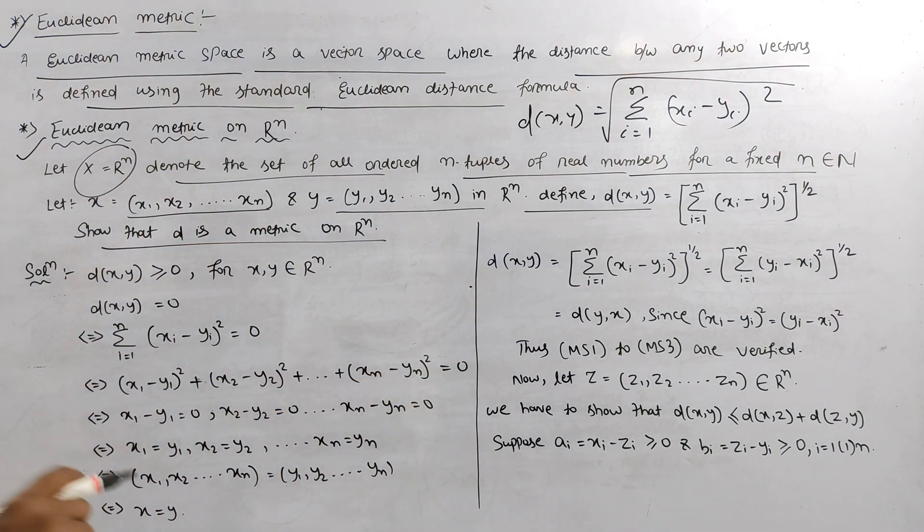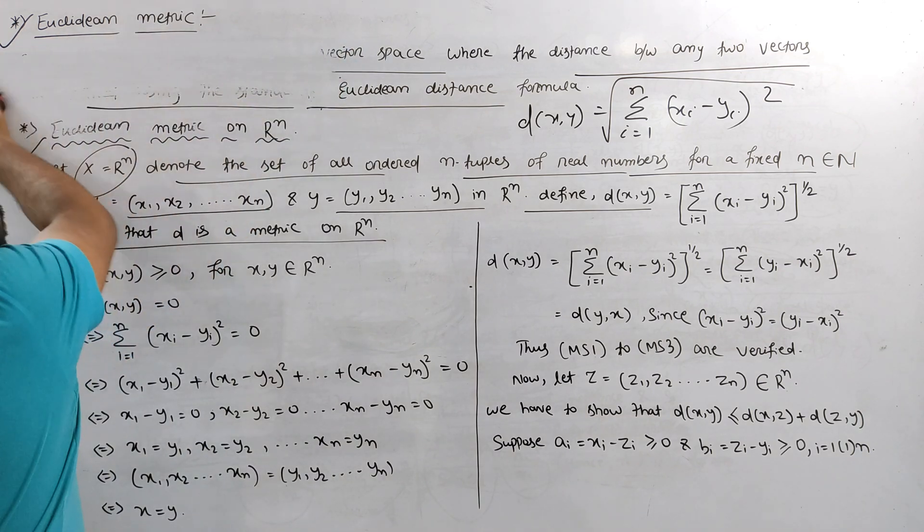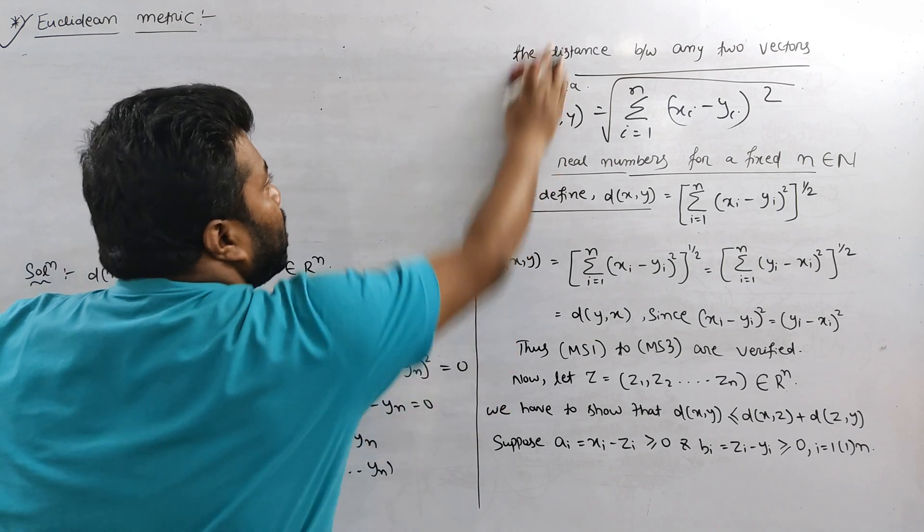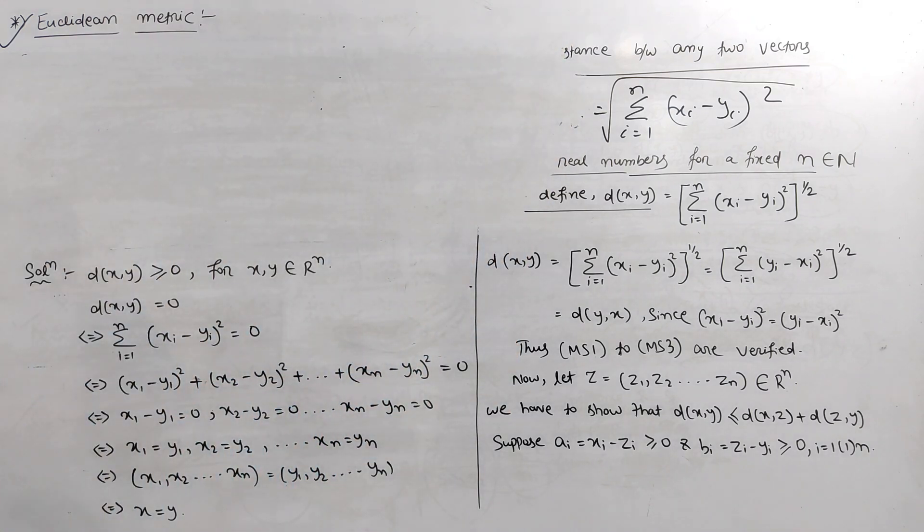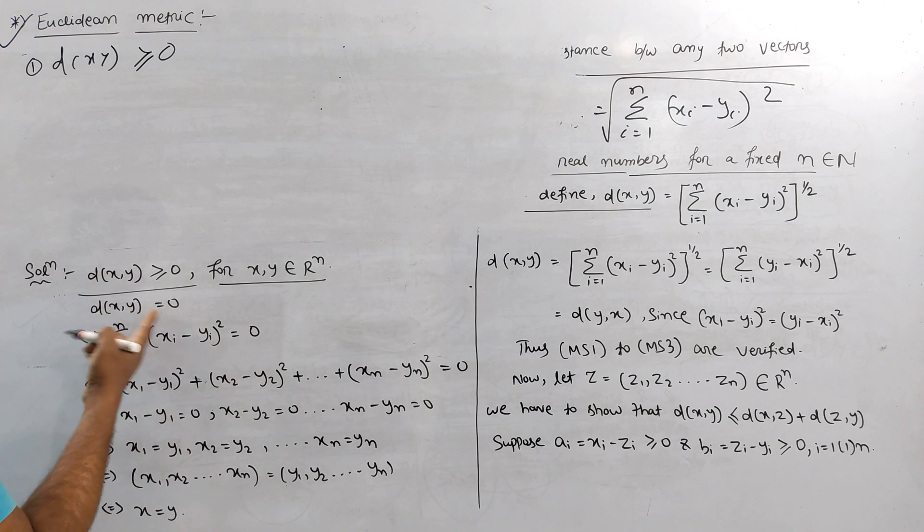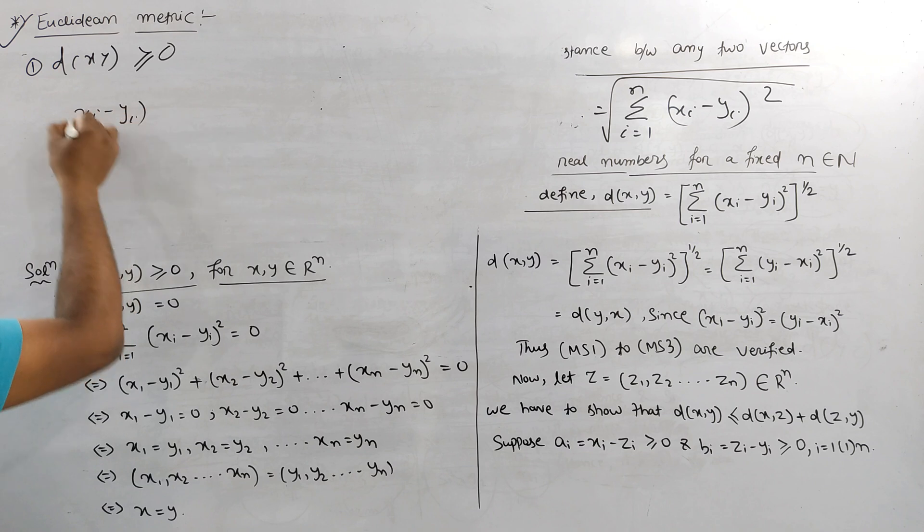We will prove that the Euclidean matrix is a matrix. Let's see one by one. The first property is d is greater than or equal to 0. d(x,y) equals summation (x_i minus y_i)^2, square root.